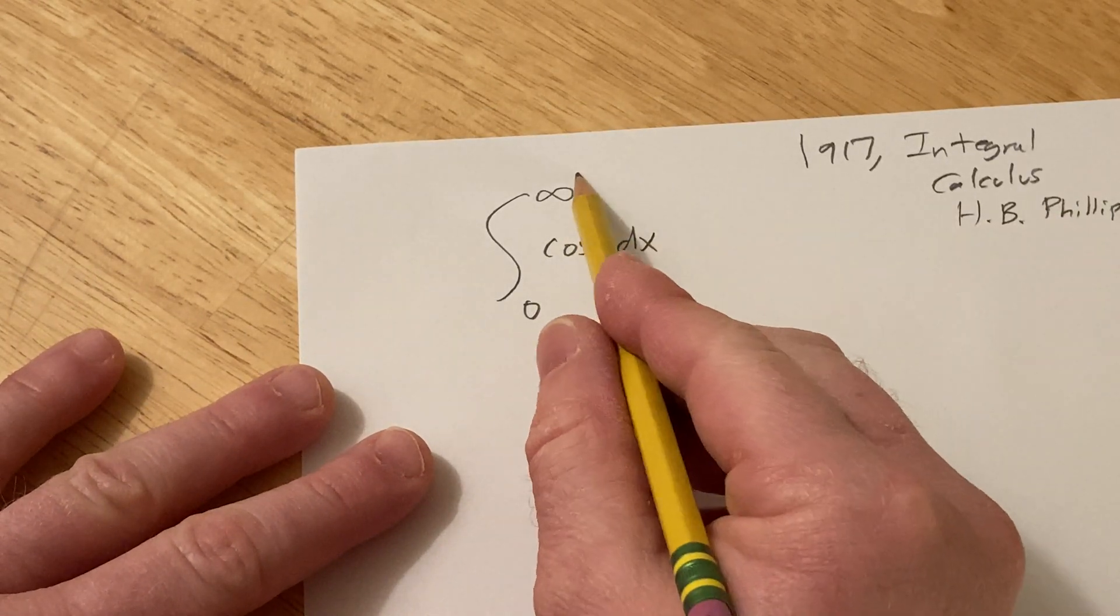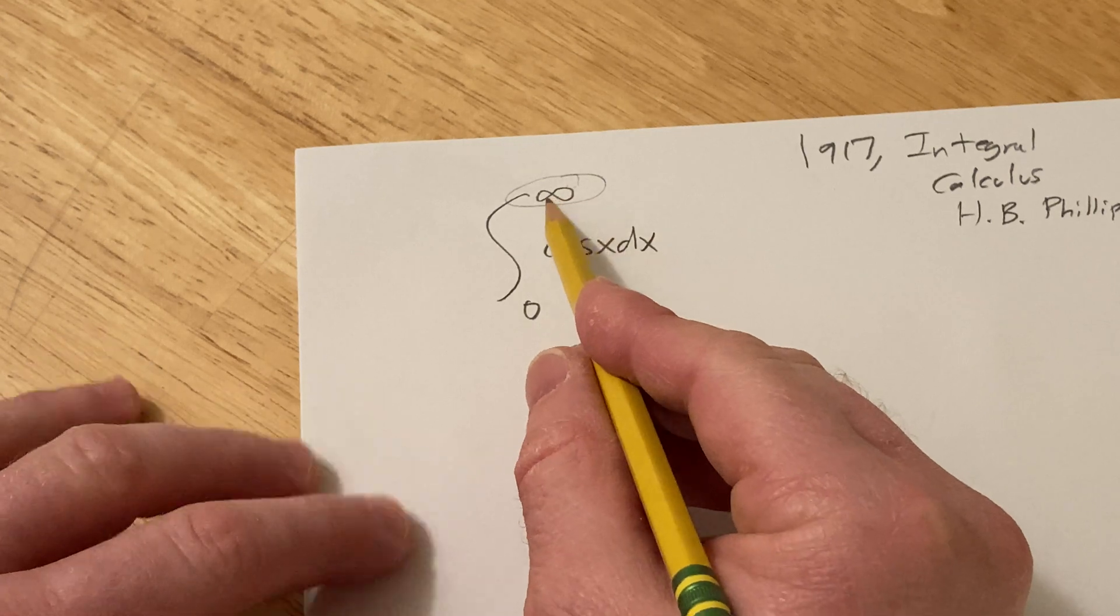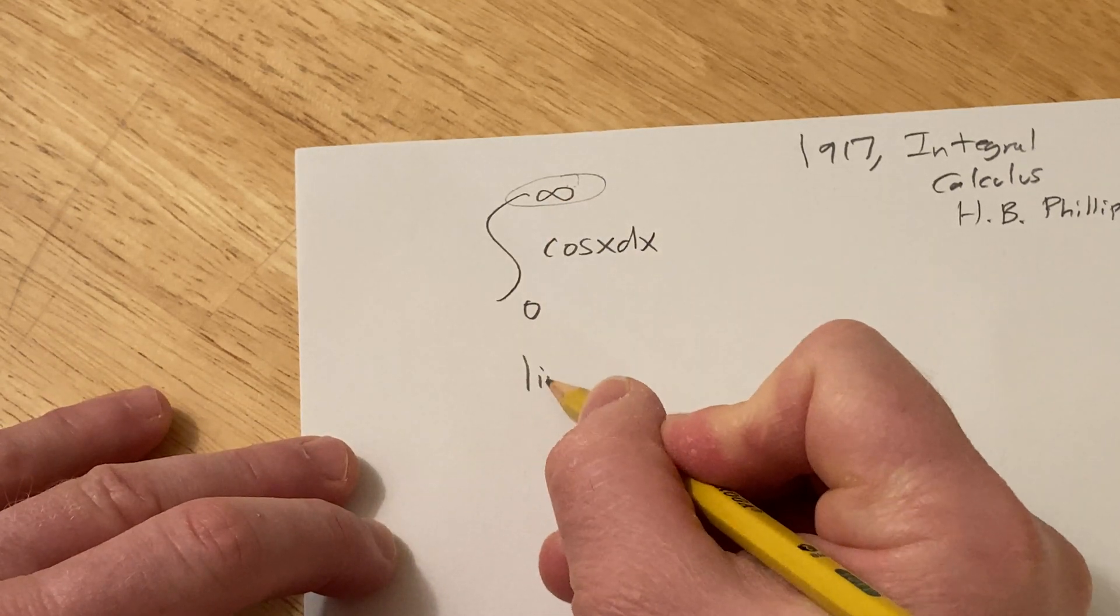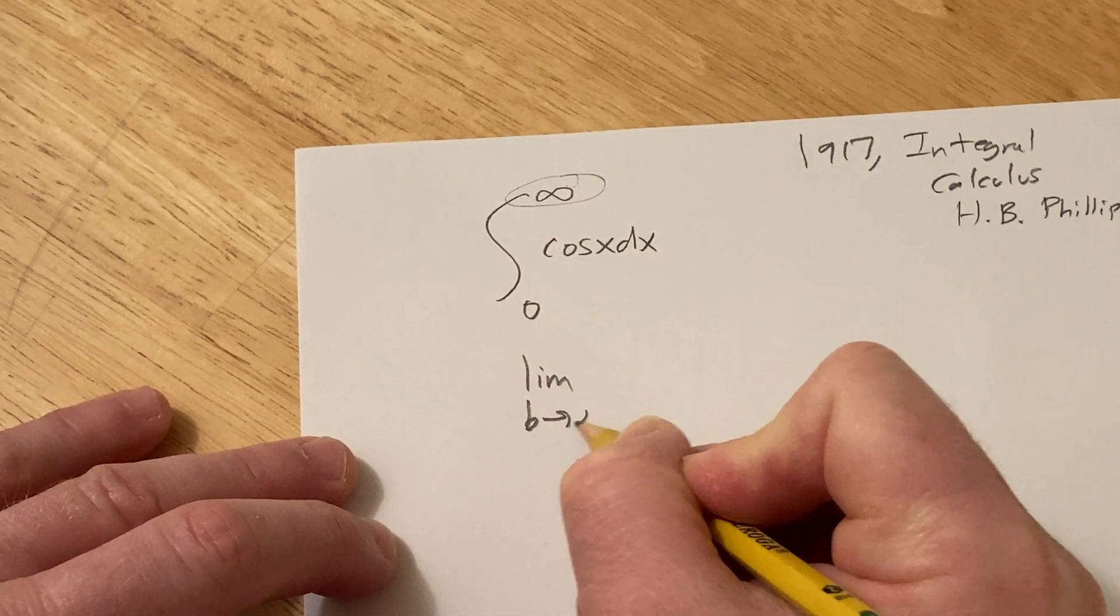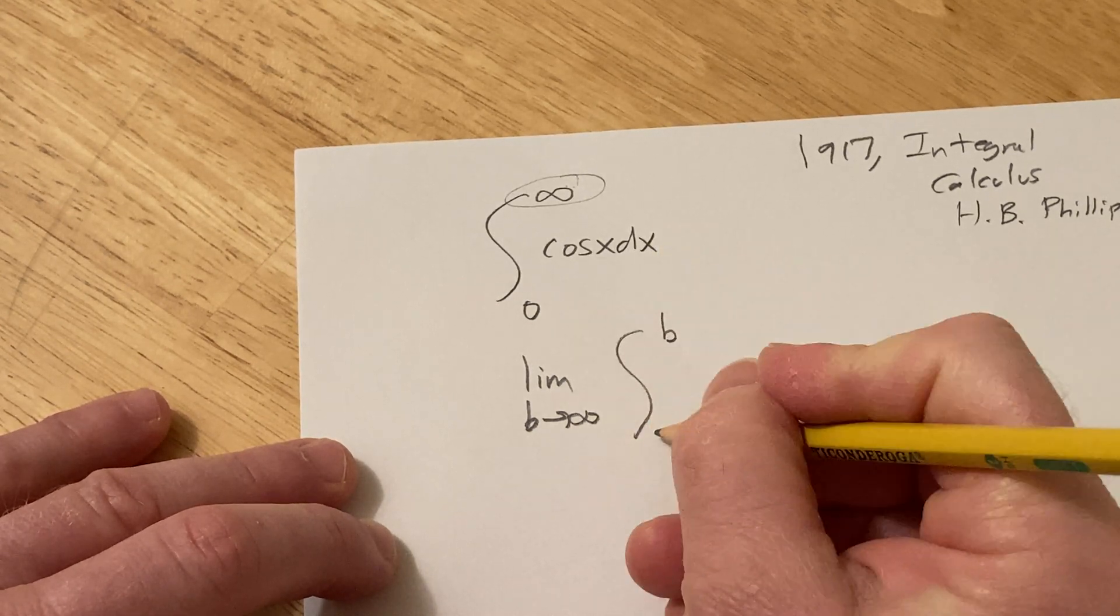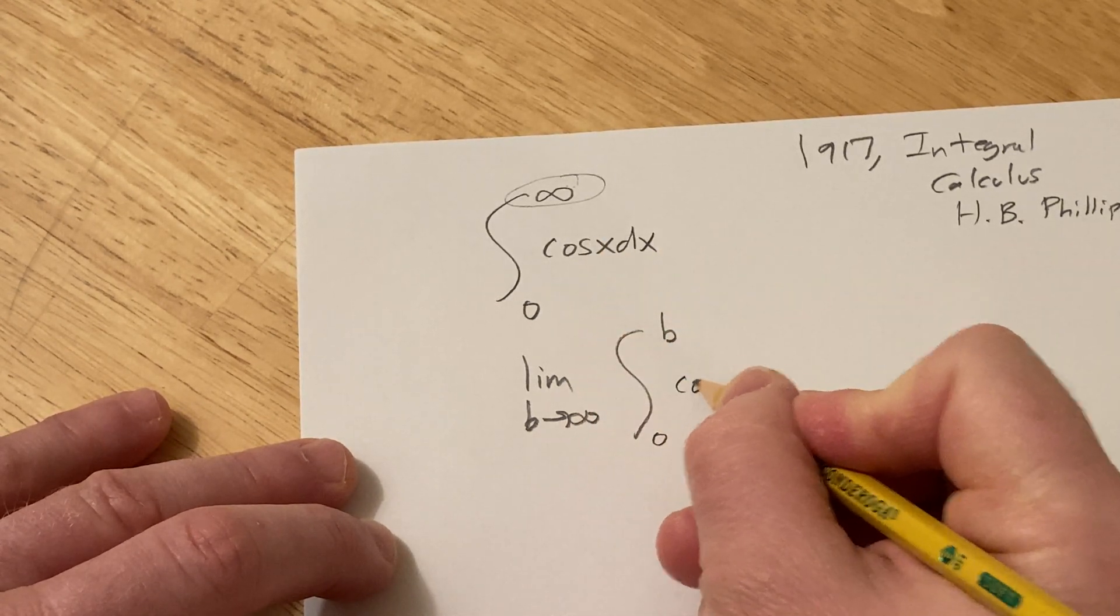So the first thing you're supposed to do is, because you have an infinity here, you're supposed to replace it with a variable. So this is the limit as B approaches infinity. And then you basically just put a B in place of the infinity like that.